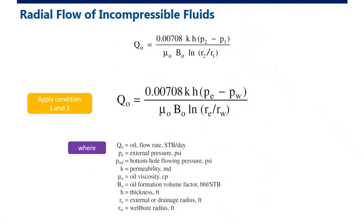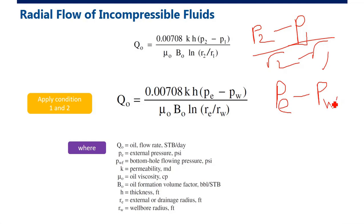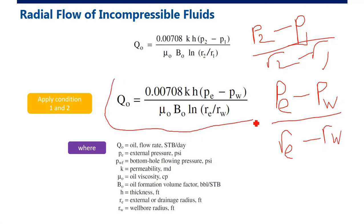The reference points are the external boundary pressure pe and the wellbore pressure pwf, with reservoir radius re and wellbore radius rw. This is the most applicable formula for us — using pe, pwf, re, and rw.